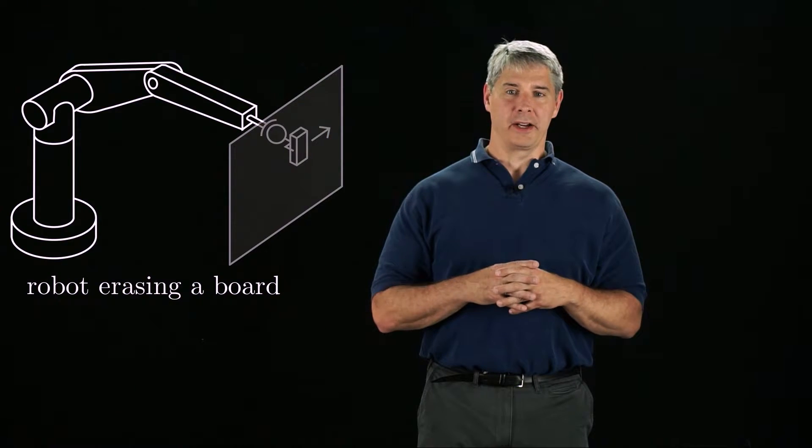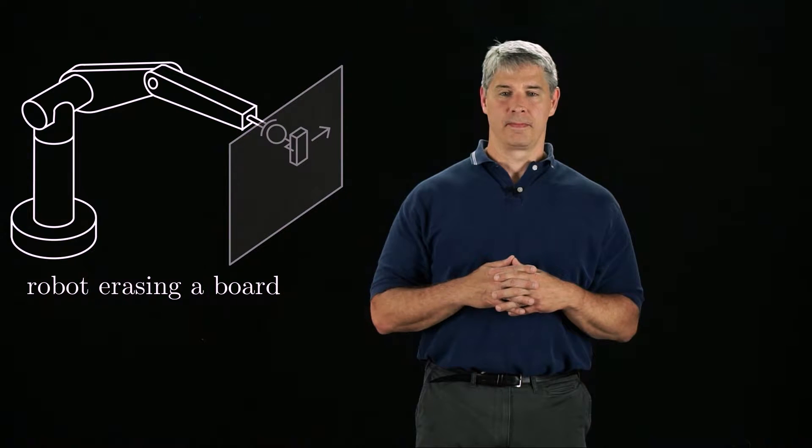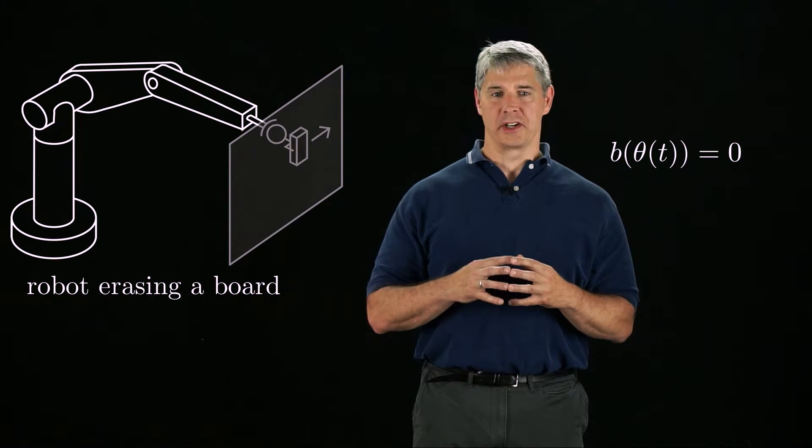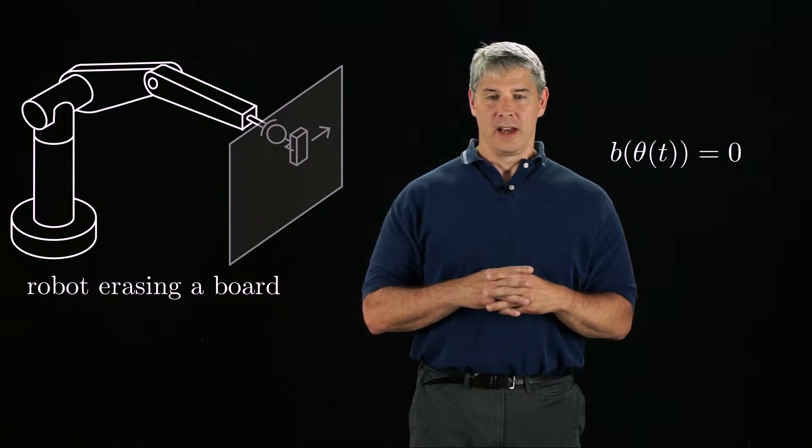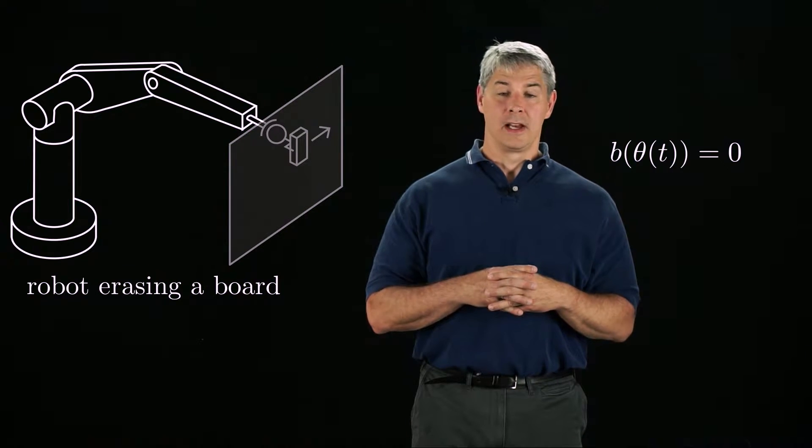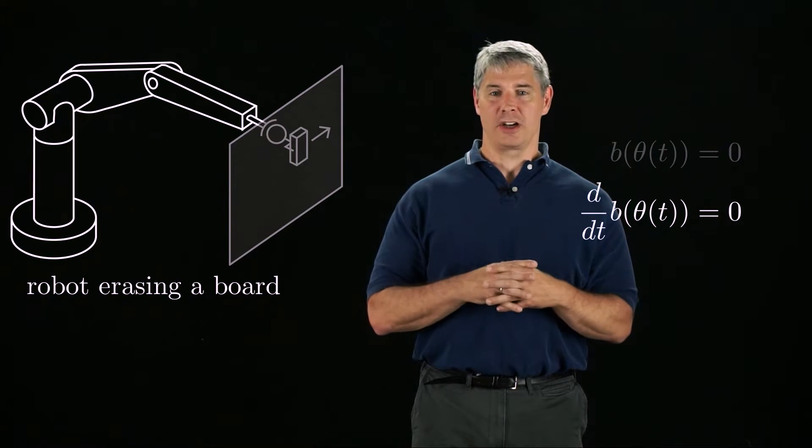Finally, an open chain robot erasing a whiteboard is another example of a robot subject to constraints. We can write the constraints on the robot configuration as the vector equation b of theta of t equals zero. These configuration constraints keep the eraser pressed against the board. Since these constraints are satisfied at all times, the time derivative of b must also be zero.